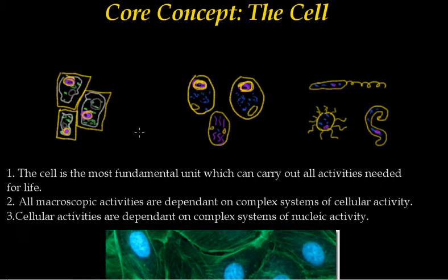The cell is the most fundamental unit which can carry out all activities needed for life. If you break down the components that make up any living thing, you end up with the cell. The cell is a little machine, and in some cases, little animals and plants. They can specialize their chemistries and bodies, and work together to create complex bodies.